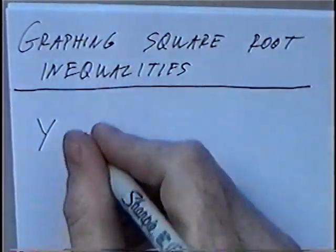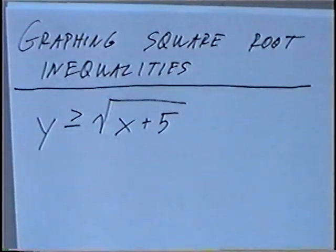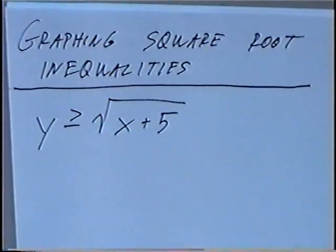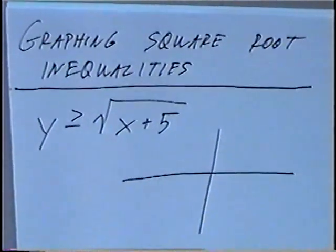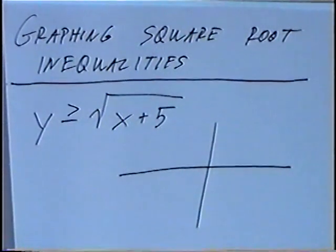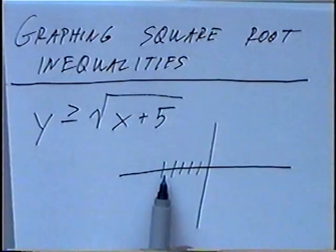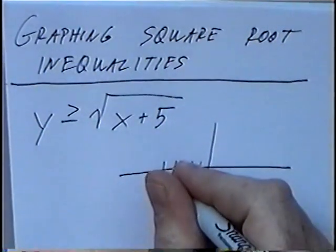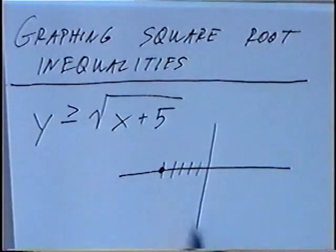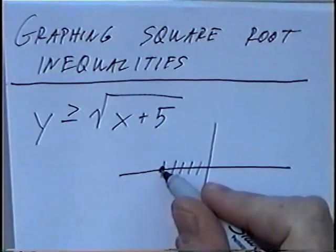The first inequality to graph is y is greater than or equal to the square root of x plus 5. To graph this we could use a t-table, or we can find a single point and then graph the inequality. The single point we want is where the square root equals zero — in this case x equals negative 5, since negative 5 plus 5 is zero, making the y value zero. Since there is no negative sign in front, the square root will curve up to the top.